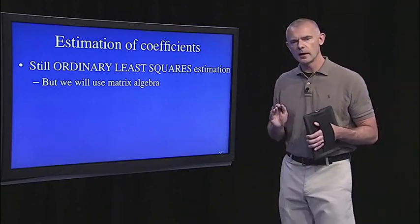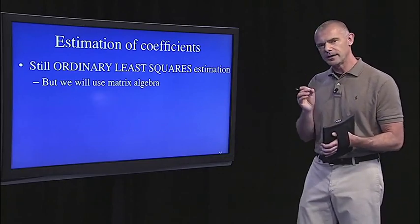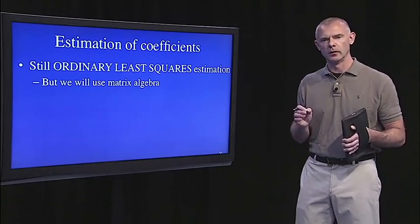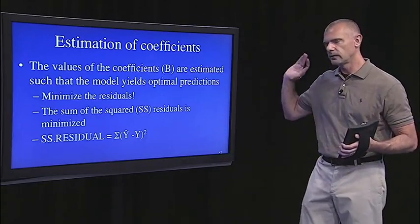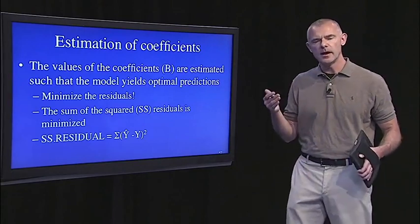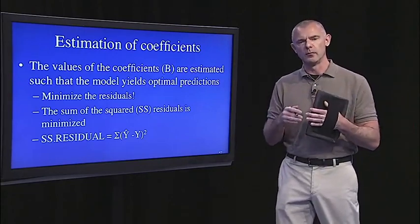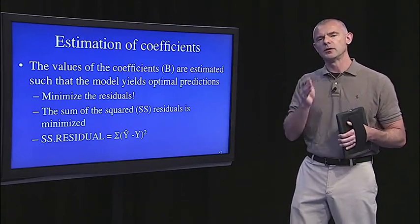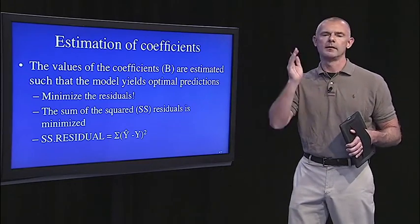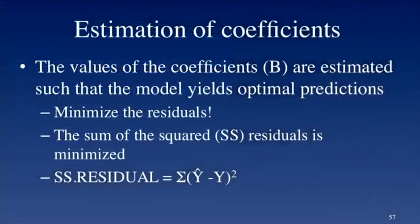We're still doing ordinary least squares regression, just like we did in simple regression, but now we'll be using matrix algebra to calculate the coefficients. The values of the coefficients are estimated such that the model comes up with optimal predictions. We want to minimize the residuals, minimize the sum of squared residuals, just like in simple regression.